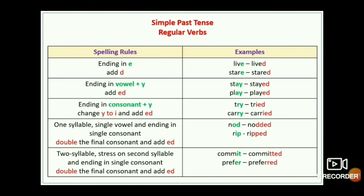Spelling rule one: words ending in E — just add D. For example: live → lived, stay → stayed. In these words the last letter is E, so we add just the letter D only.